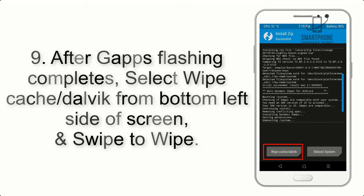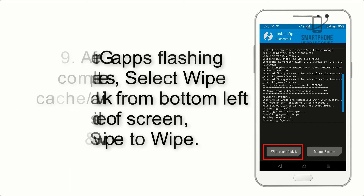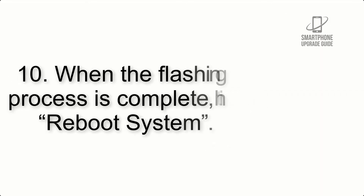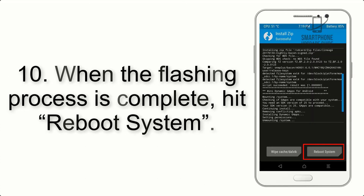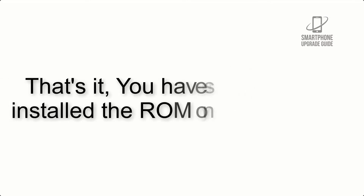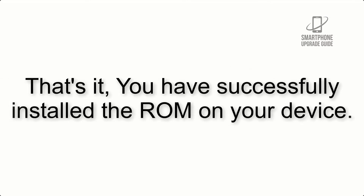Step 9: After GApps flashing completes, select Wipe Cache and Dalvik from the bottom left side of the screen and swipe to wipe. Step 10: When the flashing process is complete, hit Reboot System. That's it — you have successfully installed the ROM on your device.